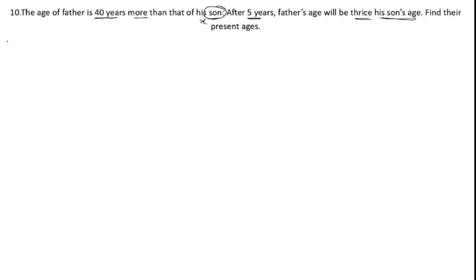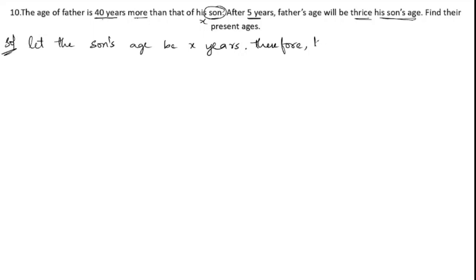We don't know the age of the son, so let the son's age be x years. Therefore, his father's age will be x plus 40 years.